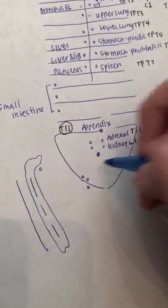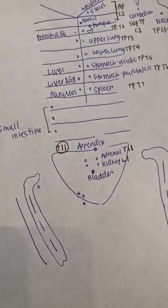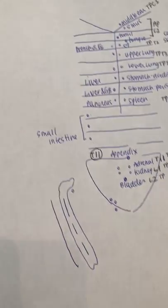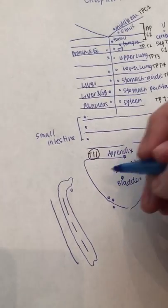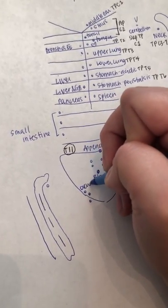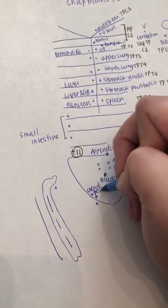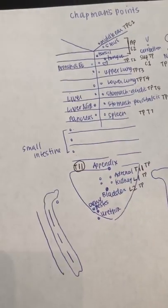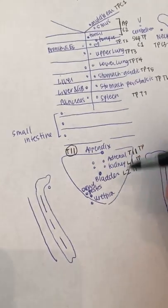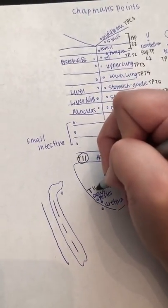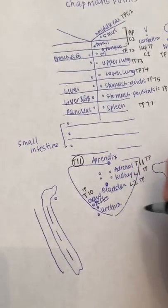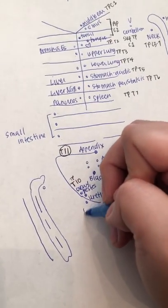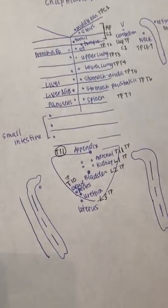Then in the peri-umbilical space is bladder, which is L2. All these are transverse process, so I'll have them write that in there. And then superior to the pubic bone is going to be ovary and testis. Of course, there are gonads here for one. And then the other one there is going to be the urethra. So they're on the same place on the front, but they're in different places on the back. So our gonads are T10 and the urethra is L3. And then inferior is going to be uterus, which is L5.